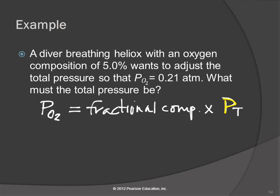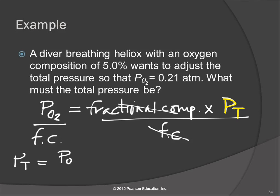We're solving this for Pt, the total pressure. So then we're going to divide by, let's just call that fractional composition, on both sides. So the fractional composition cancels out. Ptotal will equal the partial pressure of the oxygen divided by the fractional composition of the oxygen.